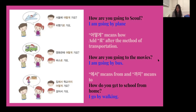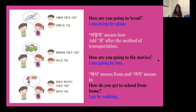Next example: 영화관에 어떻게 가요? — How are you going to the movies? The girl answers, 버스로 가요 — I'm going by bus. Once again, transportation goes first, then the word 로, then 가요. 버스로 가요.